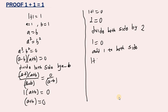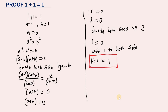So one plus one is equal to one. Done — proof complete. As you can see, one plus one is equal to one. Now I have a question for you all: can you figure out where the mistake is? Run to the comment section and tell me where the mistake is, and I'll see you there.